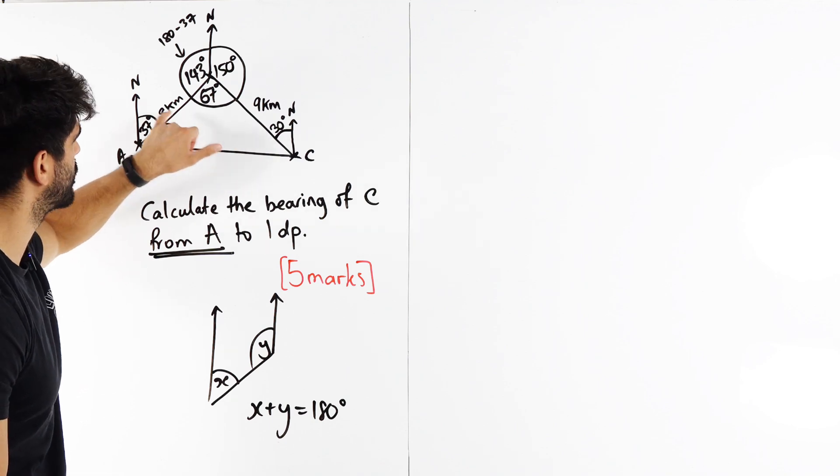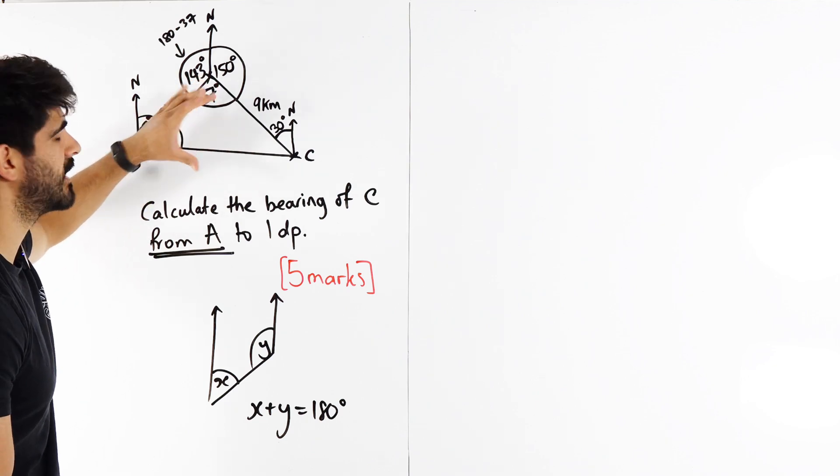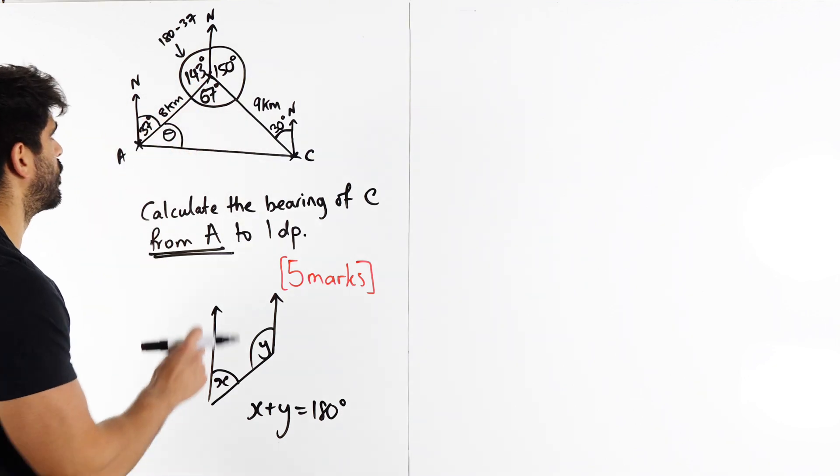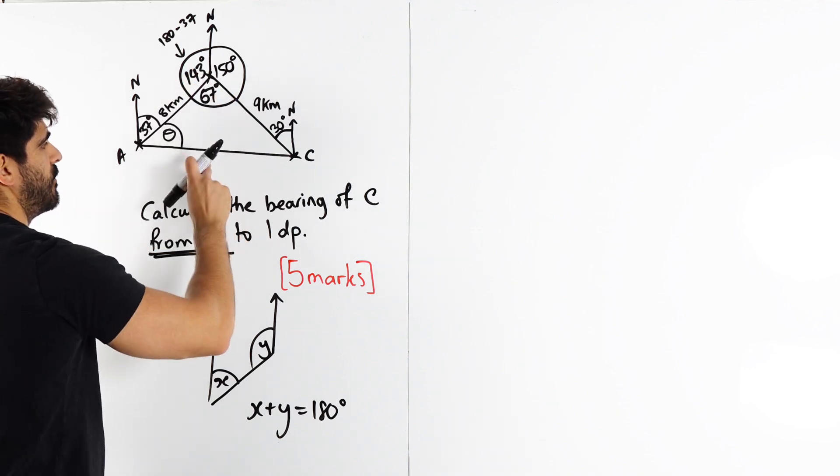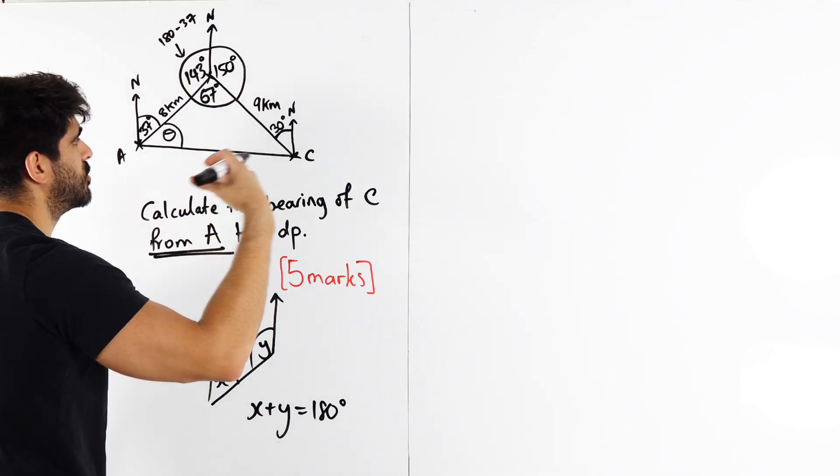If I had this angle, I have the opposite length. Sine of this over this, so finding this angle. But then, again, I have the issue of this does not have the opposite length. Okay?